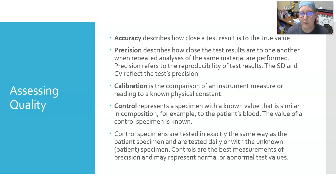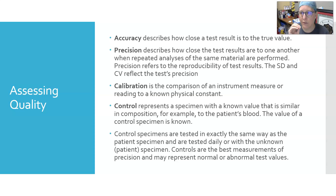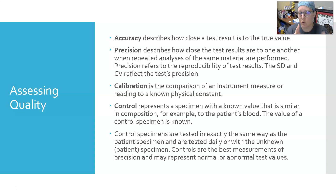Standard deviation and the coefficient of variation reflect test precision — refer back to the basic stats video for those. Calibration is a comparison of an instrument's measurement to a known physical constant. Calibrators have a single known set value and can be used to check accuracy or to set calibration curves, showing what absorbance corresponds to a specific concentration as determined by the calibrator.